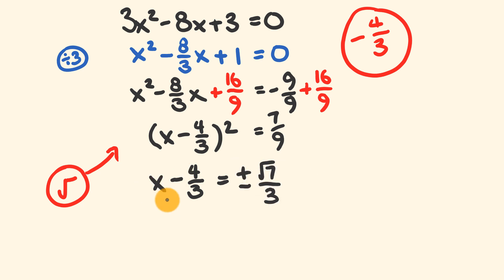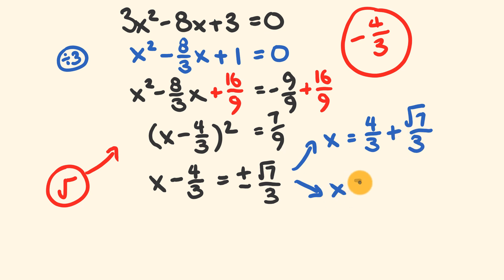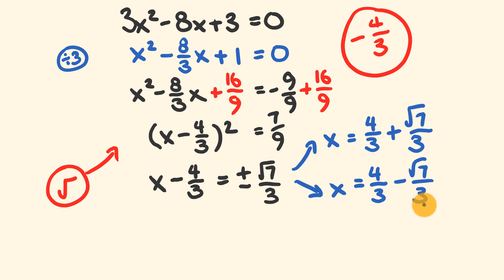Now we isolate x by itself on the left-hand side. We can either get a first solution where x equals 4 over 3 plus the square root of 7 over 3, or x equals 4 over 3 minus the square root of 7 over 3. Those are our two possible solutions. They're a bit nasty looking — working them out decimally, one is about 2.215 and the other is about 0.45.